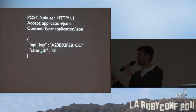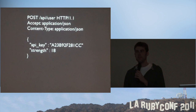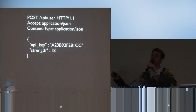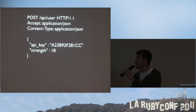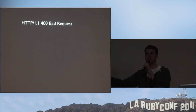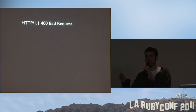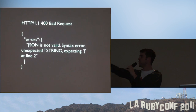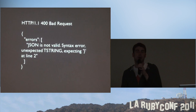Another example: if someone submits malformed JSON, you can return a 400 Bad Request. But why not build a JSON parser into your API and return what's actually wrong with the request? Return an errors field saying 'JSON is not valid' and provide the specific syntax error. There are libraries on GitHub that do this.